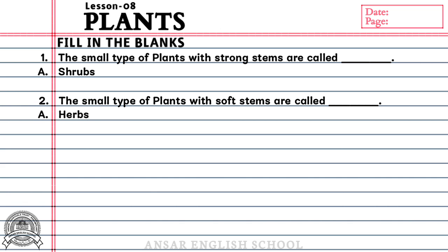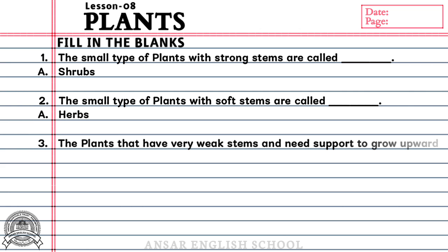Question number 3: The plants that have very weak stems and need support to grow upward are called dash. Answer: Climbers.